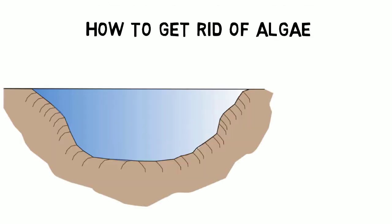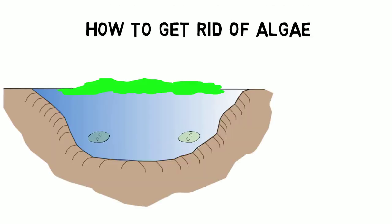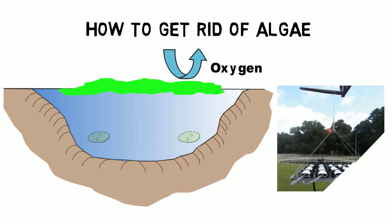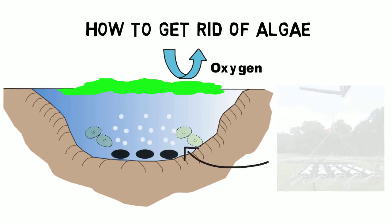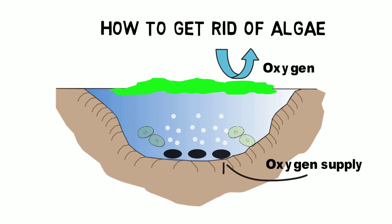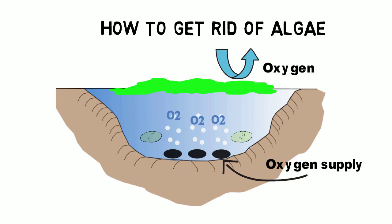Other than nitrogen, the bacteria need oxygen for enhanced growth. To increase the oxygen level in the pond, an aeration diffuser system as supplied by AET has to be installed. An aeration diffuser supplies oxygen to the pond through a fine bubble membrane. The smaller the bubbles are, the better the oxygen transfer rate, and so more oxygen can be dissolved in the water.